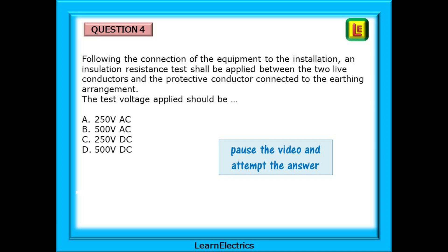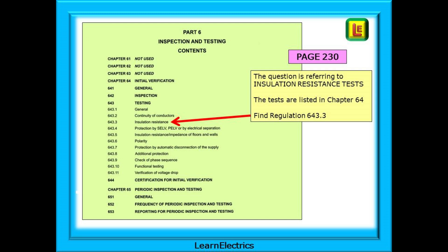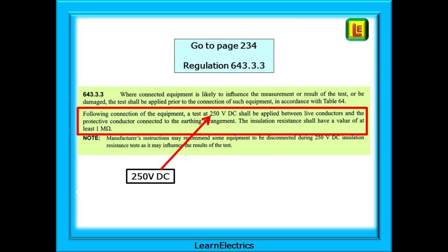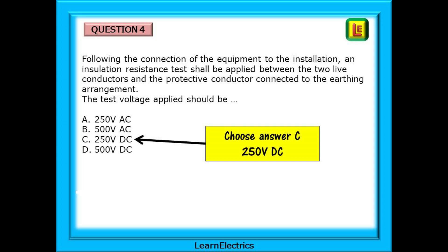Question 4: following the connection of equipment to the installation, an insulation resistance test shall be applied between the two live conductors and the protective conductor connected to the earthing arrangement. The test voltage applied should be — and four choices are given. Go to page 230 and find under chapter 64 the list of different tests. Regulation 643.3 is about insulation resistance tests. On page 234, Regulation 643.3.3 gives our answer: the test voltage to be applied is 250 volts DC — a popular exam setter choice. So our answer is C, 250 volts DC.